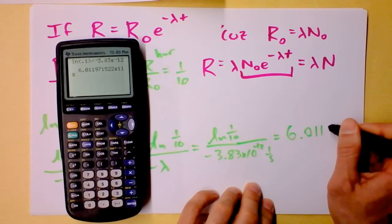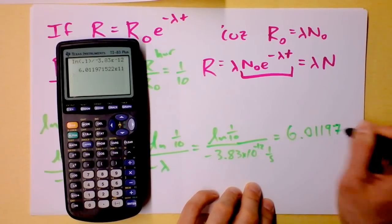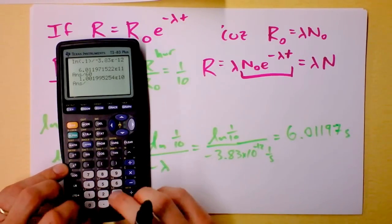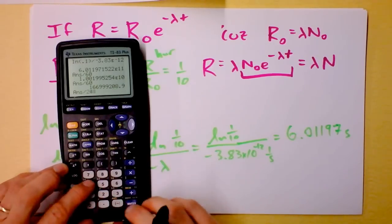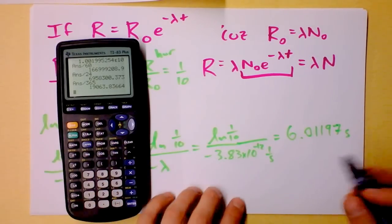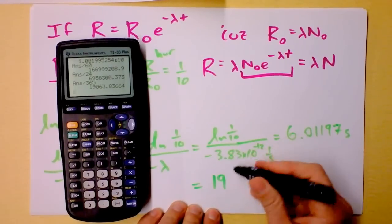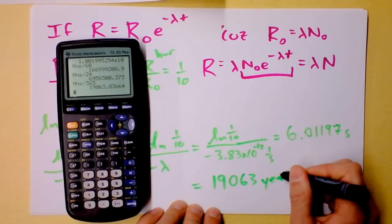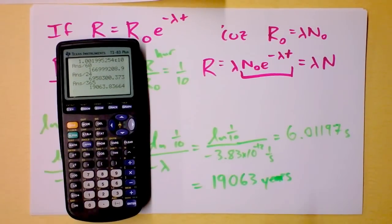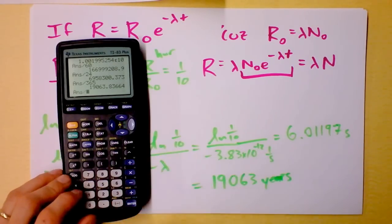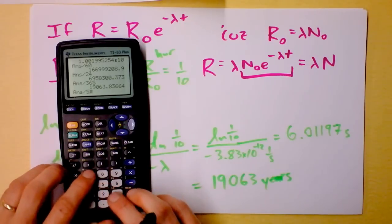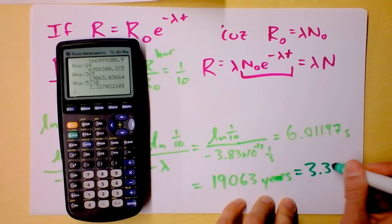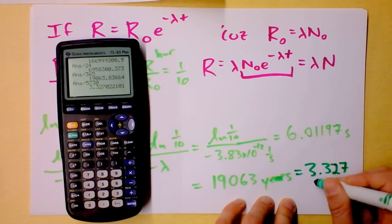But wait, we're not interested in seconds, right? So, let's see how many minutes it is. Oh, it's that many minutes. That's still a lot of minutes. Let's see how many hours it is. Oh, it's that many hours. It's still a lot of hours. How many days is it? That many days. Dang. Let's go to years. Wow. So, we're talking about 19,000 and then another 63 years. I see another way to do this though. Because what's interesting about this is I'm going to figure out how many half-lives that was. Remember we said that the half-life of carbon is 5,730 years. It looks like it's 3.327 half-lives.